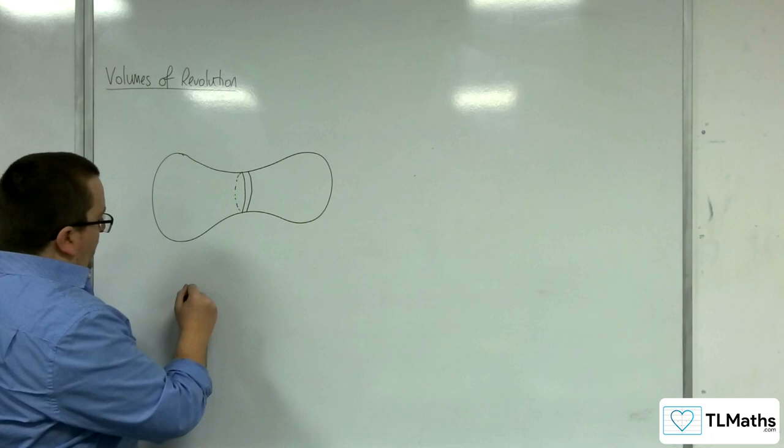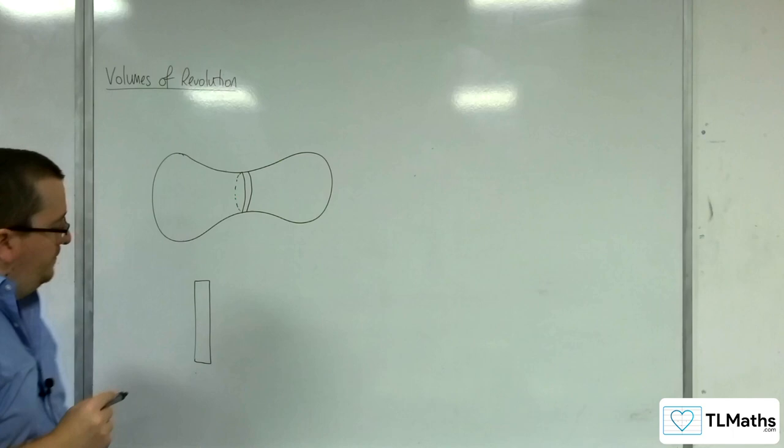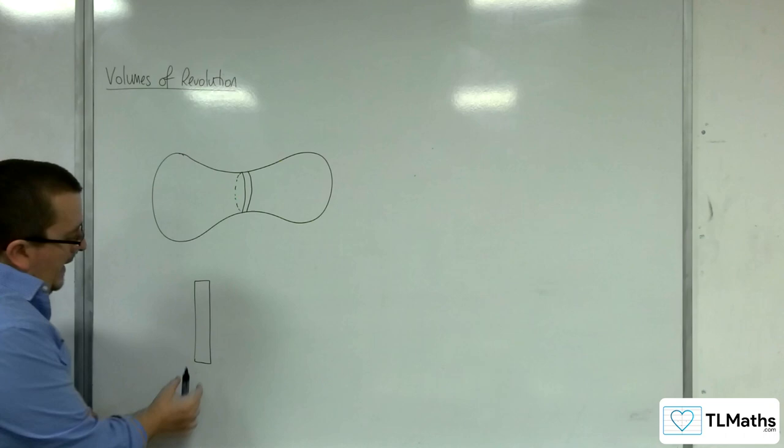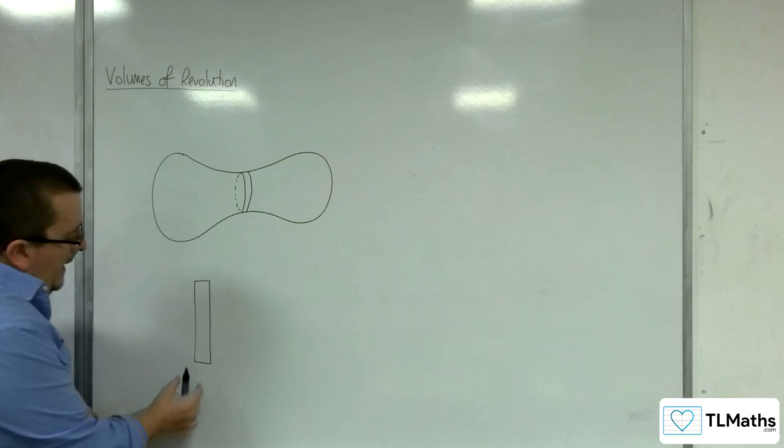Now, this slice will be a circle on either side. And it will have some width. And let's call that width delta x, a small amount of x.